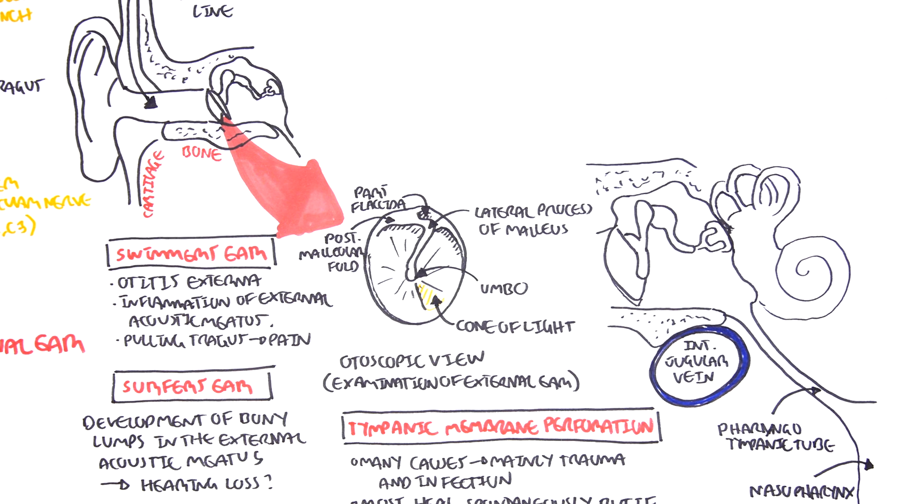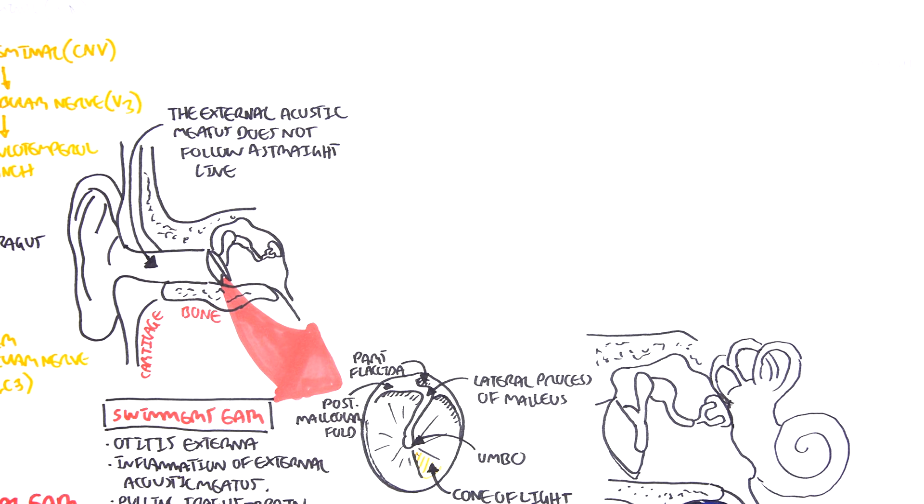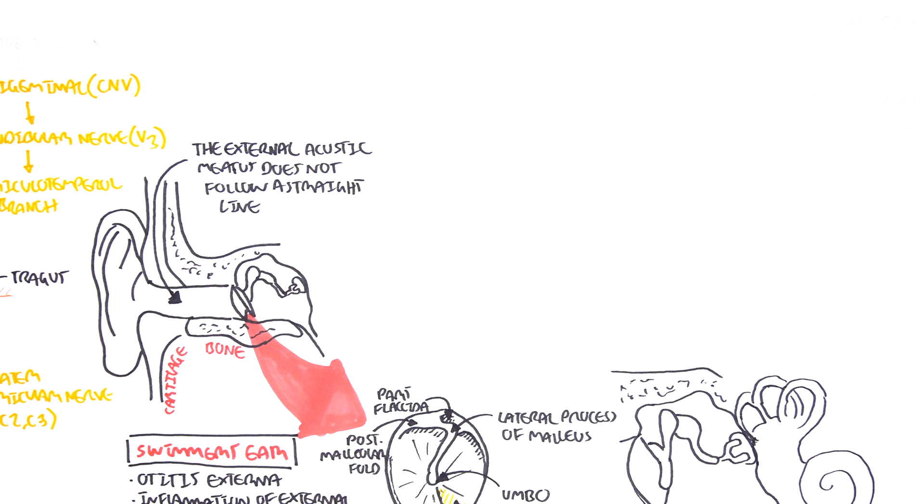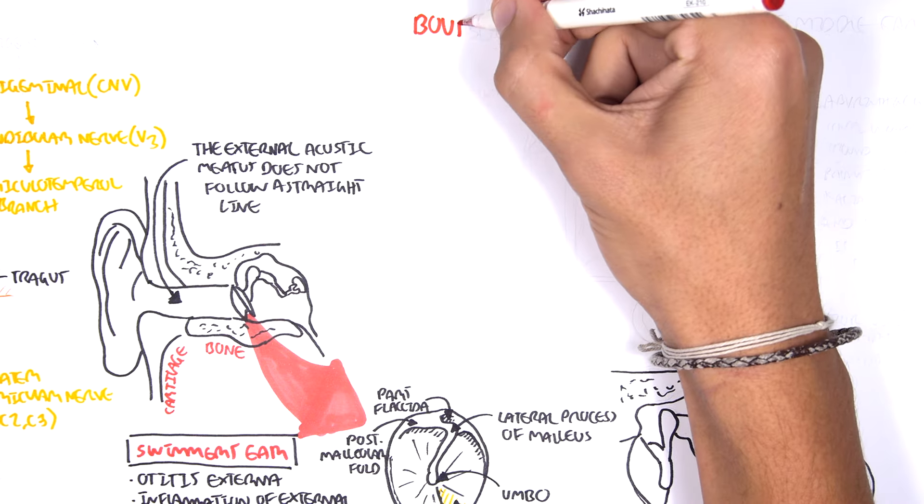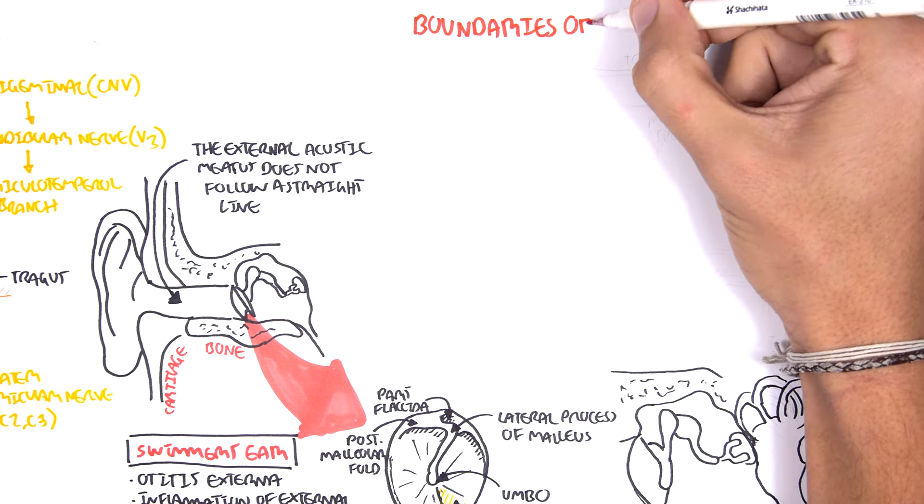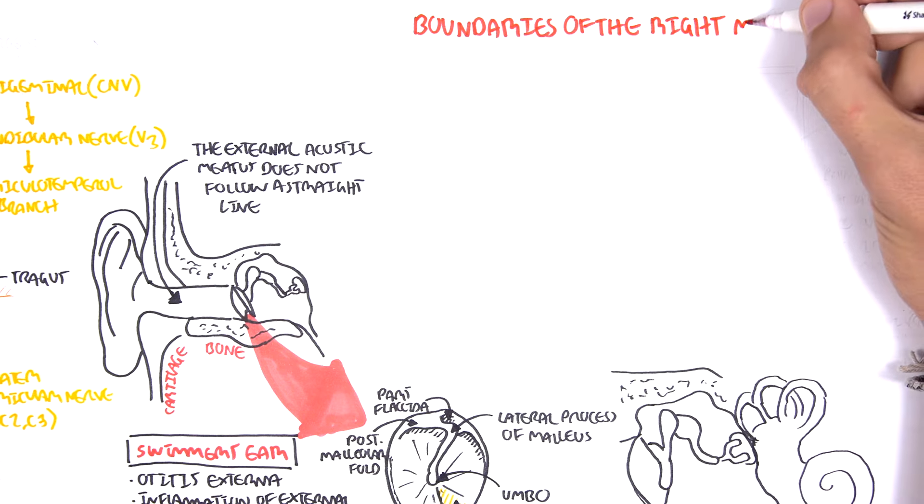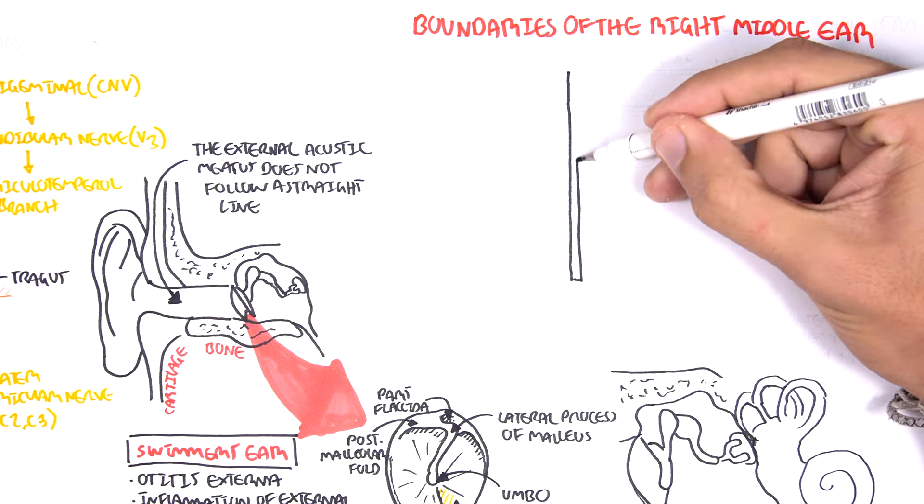This leads us to the next topic, which are the boundaries of the middle ear. So the middle ear, where the bony ossicles are, the boundaries that make up the middle ear. We're going to look at the right middle ear.